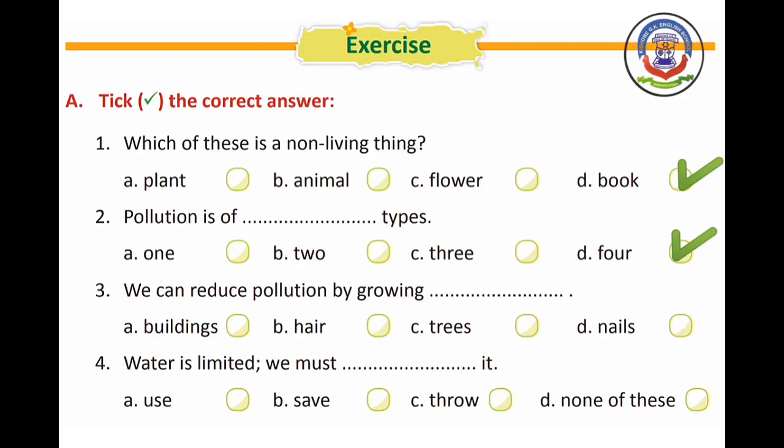Number 3 — we can reduce pollution by growing dash. Options: A) buildings, B) hair, C) trees, D) nails. The right answer is trees. We can reduce pollution by growing trees.